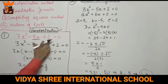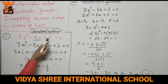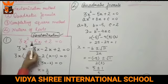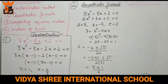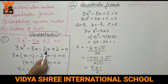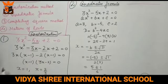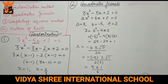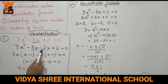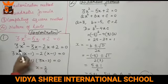So we multiply 3 and 2 to get 6. We need two factors of 6 that add up to the middle term coefficient. So we split: 3x squared minus 3x minus 2x plus 2 is equal to 0.